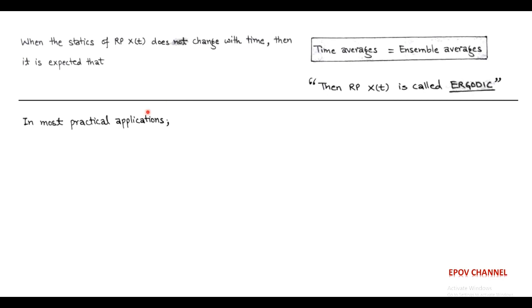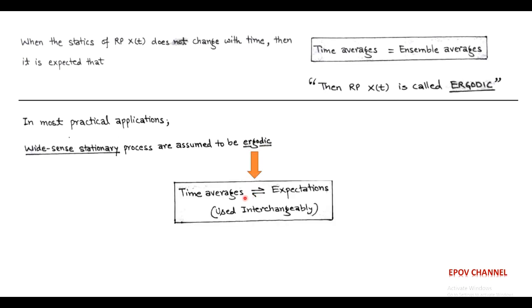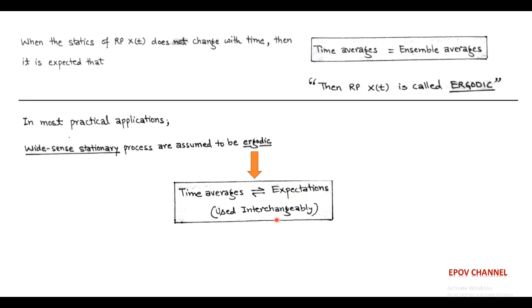In most practical applications, wide-sense stationary processes are assumed to be ergodic, where time averages and expectations are used interchangeably. All ergodic processes are stationary processes, but it is not necessary that all stationary processes are ergodic.